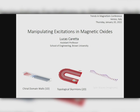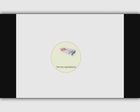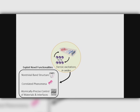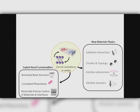What I'm particularly excited about, which I think is a little different, is actually our ability to manipulate these systems, do dynamics, and ultimately control their propagation. I'll tell you today how we can use these excitations specifically in oxide materials. The reason we're using oxide materials is because they have a vast number of novel functionalities — things like non-trivial band structures, correlated phenomena, and the ability to atomically engineer structures and interfaces for desired functionalities, which lends itself to some new materials physics.